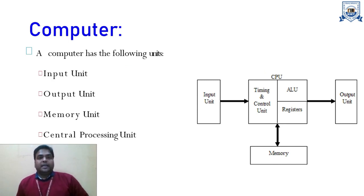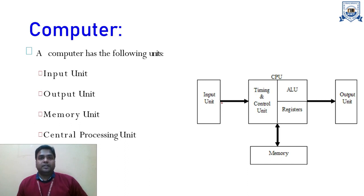Before starting with microprocessor, it should be very clear why a microprocessor is required and where it is actually used. If we are talking about tube lights or any light system, no processing is required — you simply switch on the button and the light goes on. But when we talk about air conditioning, we use a remote system where we press a particular key and a particular function is performed. In that case, we require processing.